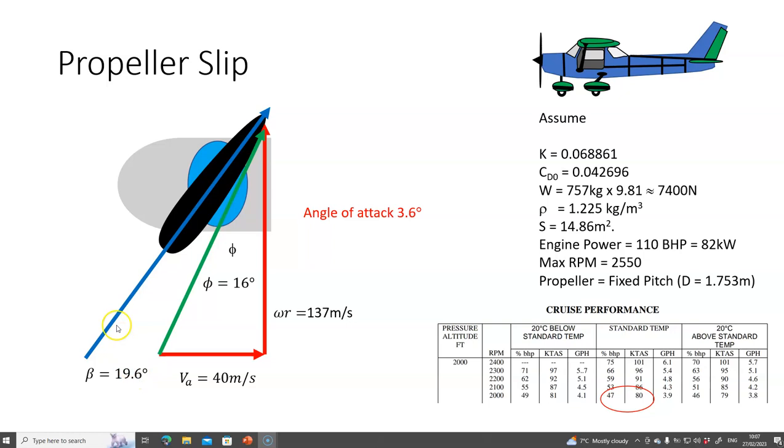We got the blade angle to be approximately 20 degrees—19.6—and we got the angle of advance to be 16 degrees, and that gives me an angle of attack of 3.6 degrees, and that's typically where we'd want to be.